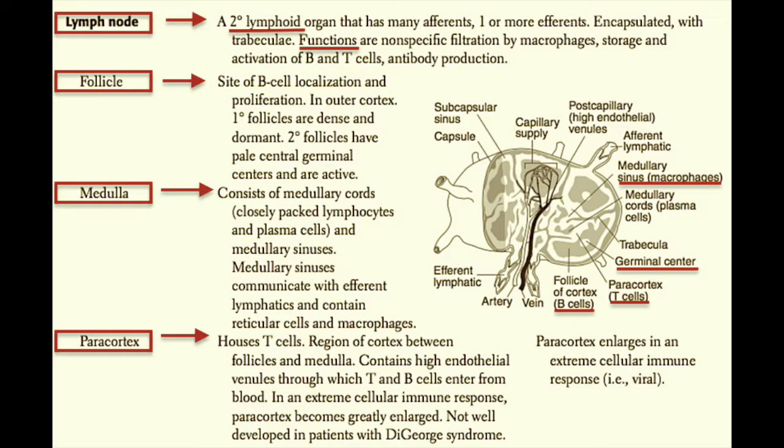In between the follicles of the cortex and the medulla, we find the pericortex. This is the T cell zone — this is where they live. This region also contains high endothelial venules, through which T and B cells enter from the bloodstream. In an extreme cellular immune response, this pericortical area becomes greatly enlarged with active and expanding B and T cells.